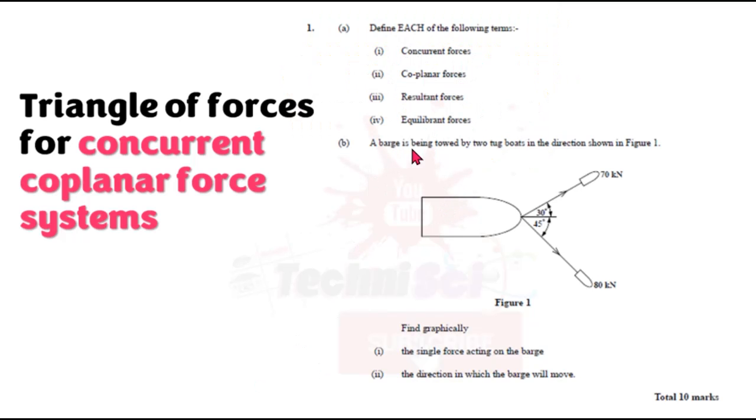So it says a barge is being towed by two tugboats in the direction shown in figure one. So a barge, no need to get technical with that or let that throw you off. It's really a long flat bottom boat and it's used for carrying freight on canals and rivers. It's either self-powered or it is towed by another. In this case, it's being towed by two tugboats. So that's not the thing that you're going to focus on. We are just going to look now at what we are given. So we see tugboat here, 70 kilonewtons. Tugboat here, 80 kilonewtons. And we are observing the angles between the direction or the line of action of the force with which they are pulling the barge.